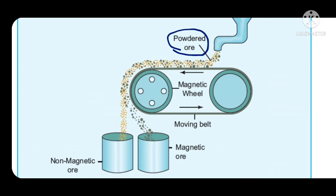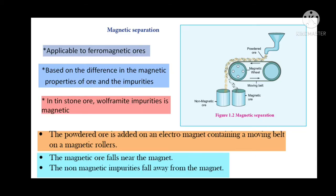Powdered ore falls onto the moving belt. Non-magnetic ore falls into the container immediately. Magnetic ore is attracted by the wheel, goes along with it for some time, and then falls into a separate container. The powdered ore is added on the electromagnet containing a moving belt on a magnetic roller. The magnetic ore falls near the magnet, and non-magnetic impurities fall away from the magnet.